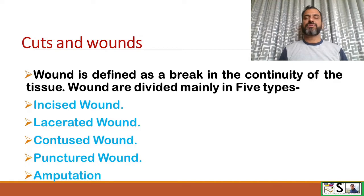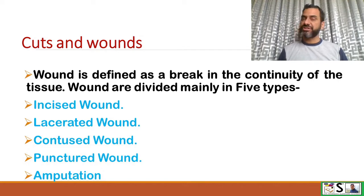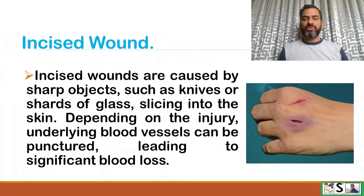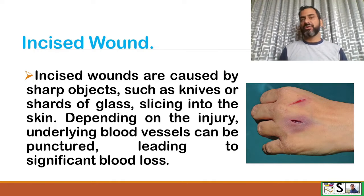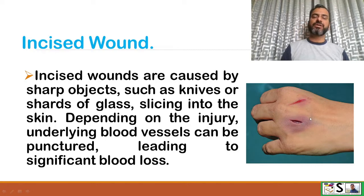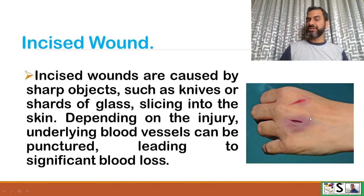These are: incised wound, lacerated wound, contused wound, punctured wound, and amputation. Incised wounds are caused by sharp objects such as a knife or shreds of glass slicing into the skin. Depending on the injury, underlying blood vessels can be punctured, leading to significant blood loss.